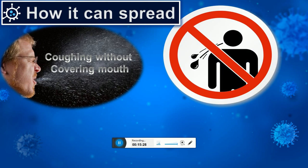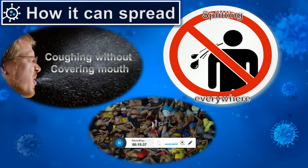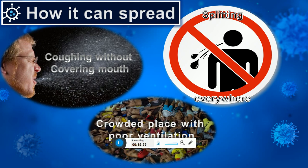The second route is spitting everywhere — don't spit anywhere. The third route is crowded places with poor ventilation. Any microorganism, whether bacilli, fungi, or bacteria, requires humidity to spread, as that is a favorable environment for growth and infecting another person.